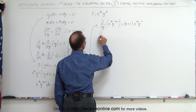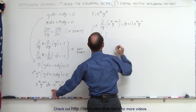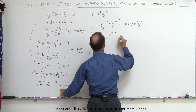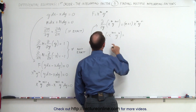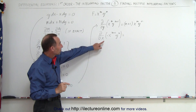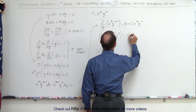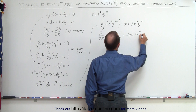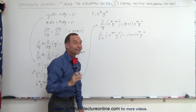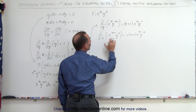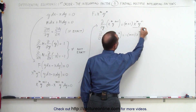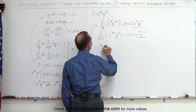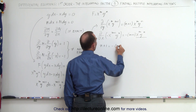For this to be an exact equation, these two expressions must be equal to each other. We have x^m · y^n on both sides, which means for exactness it requires that n plus 1 must equal minus the quantity m plus 1.